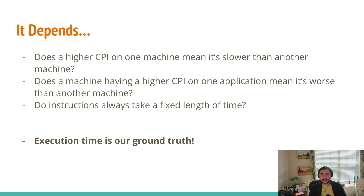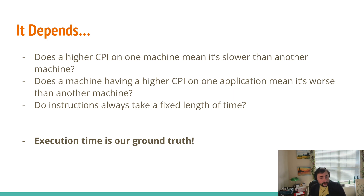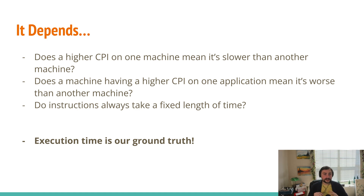Does a machine having a higher CPI on one application mean it's worse than another machine? The answer is it depends. We often want our computers to be good across a range of applications, not just a single one. While a machine may have a high CPI on a particular application, that doesn't mean it's worse across all applications. Applications stress different things — some might be very compute bound, some might be memory bound or IO bound, and some might be a mix of all three.